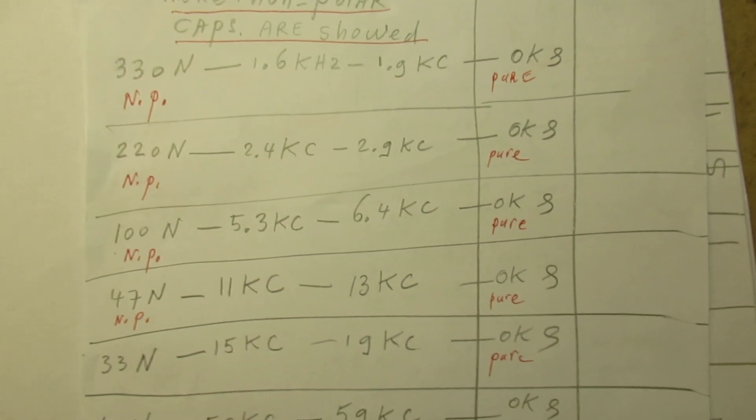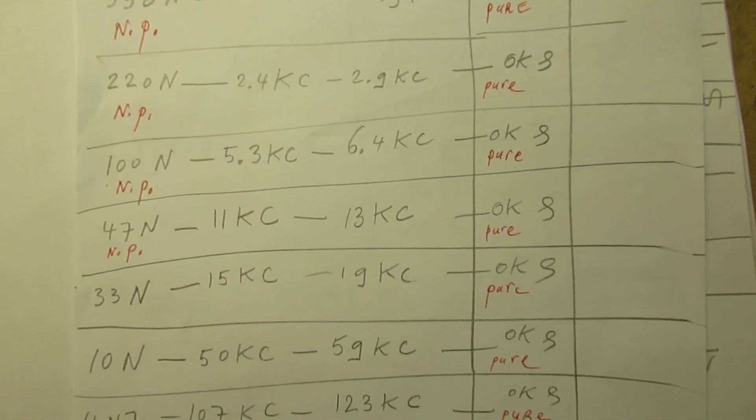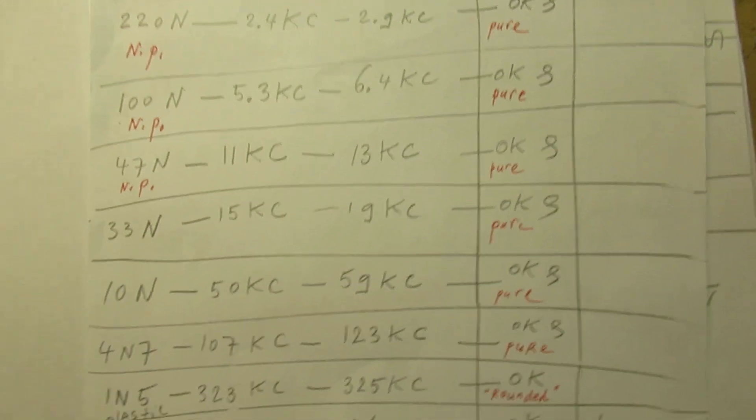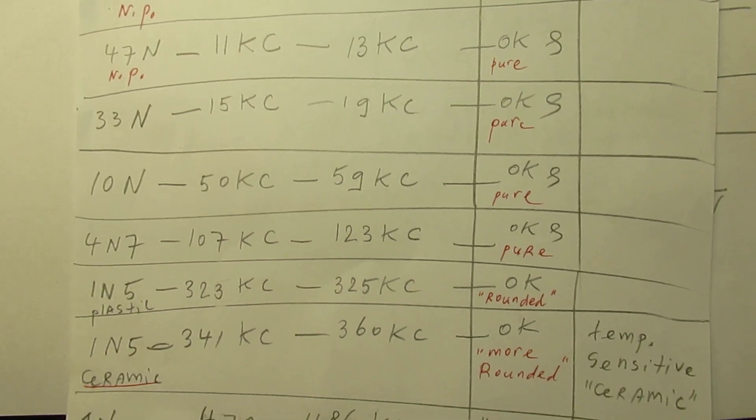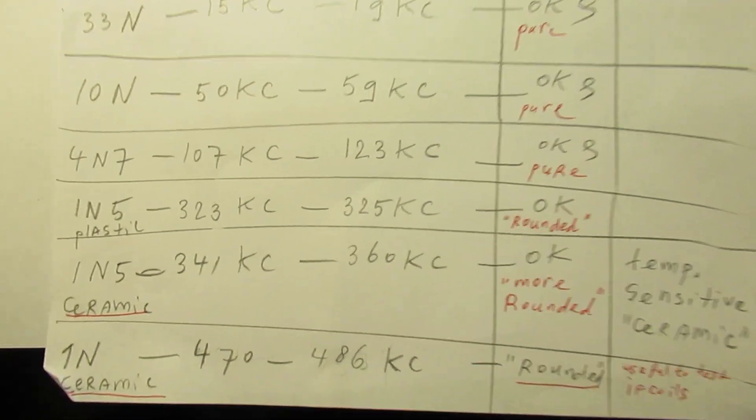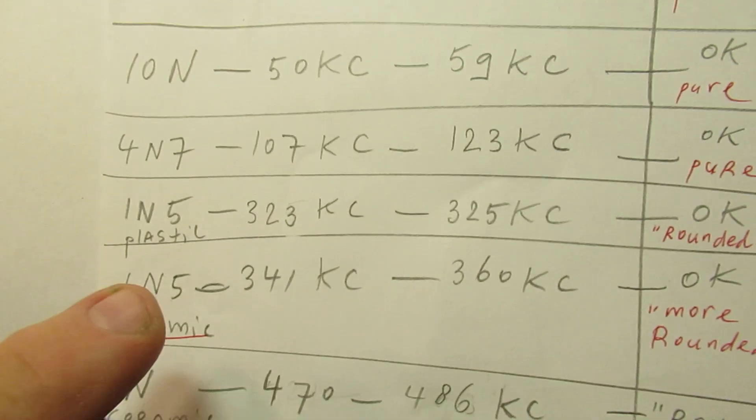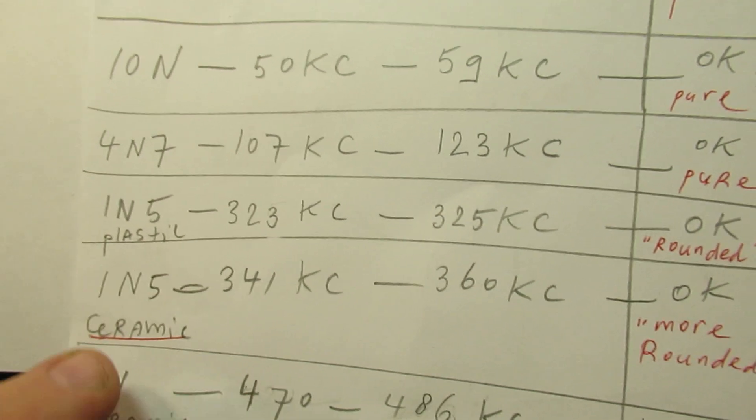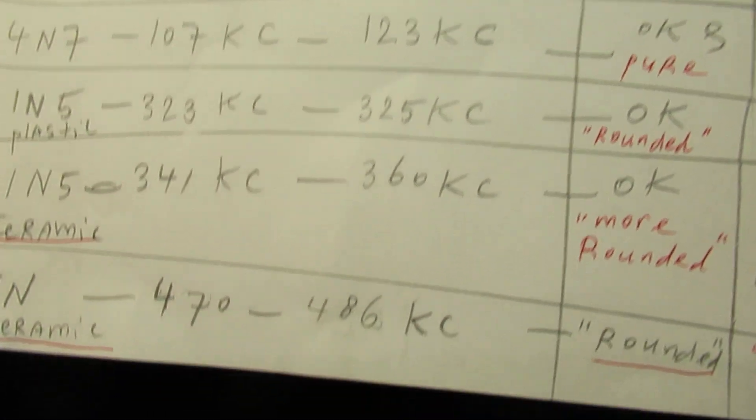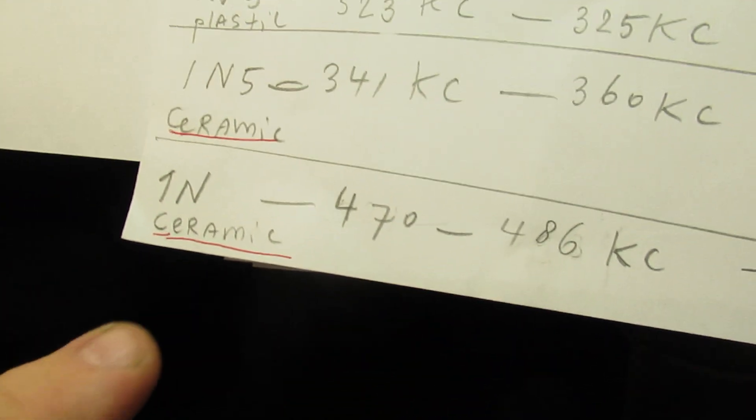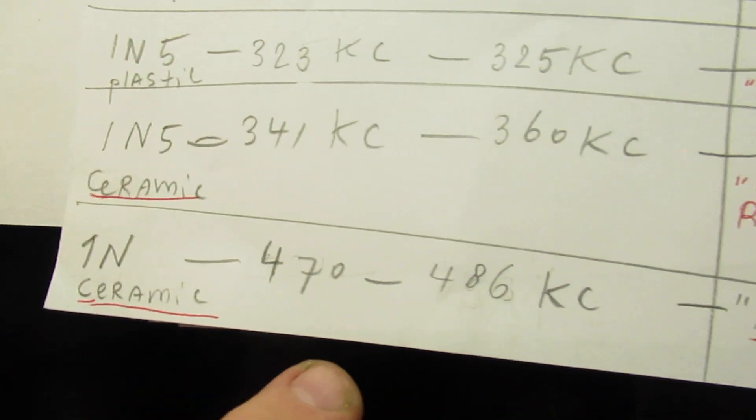You have to search for yourself which capacitor to be used and in which frequency band you want to use this oscillator. 1.5 nanofarad - that is 1500 picofarad - we are in this range.